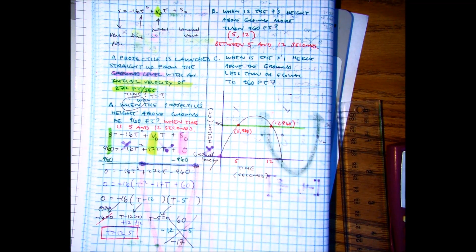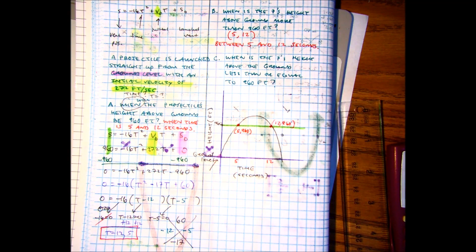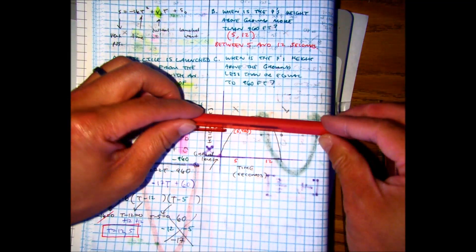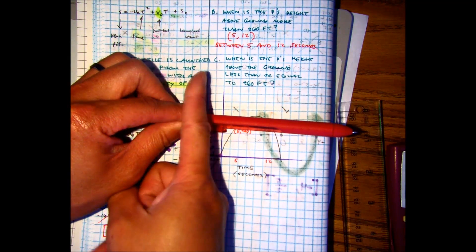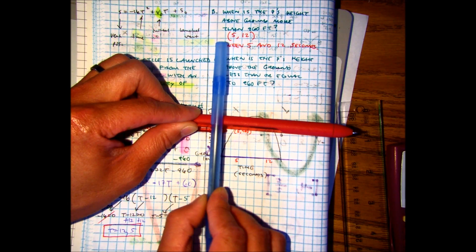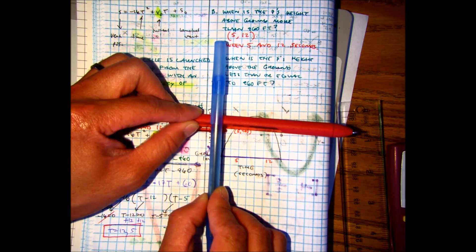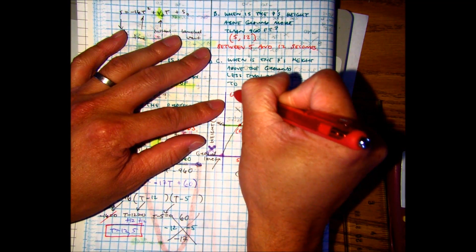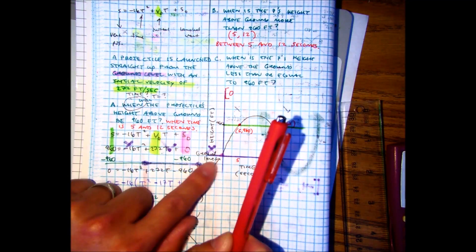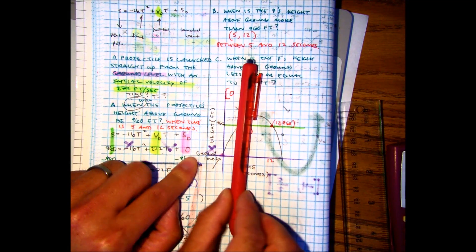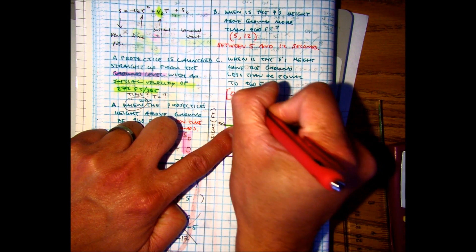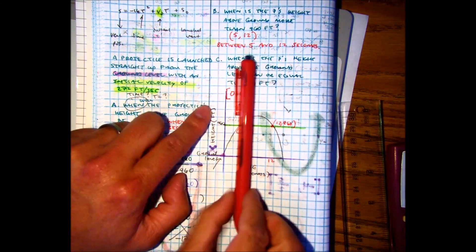I used interval notation there. When is the projectile's height above ground less than? Well, I just have to think in interval notation, starting from here. If I start here, where's this in time? Zero. I'll include zero. Because at zero time, it should be zero seconds. And then all the way up to 5 seconds. Because it says less than or equals to. So this is kind of like the left side.